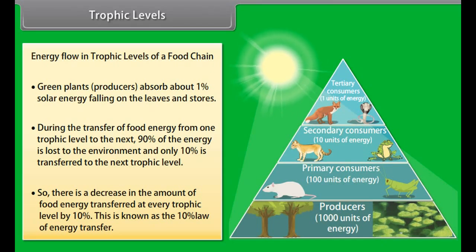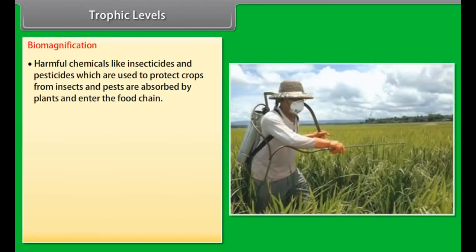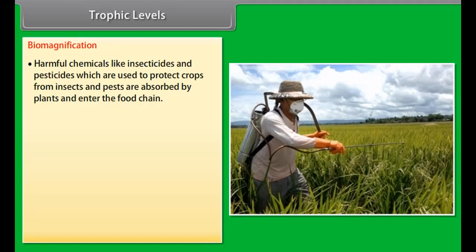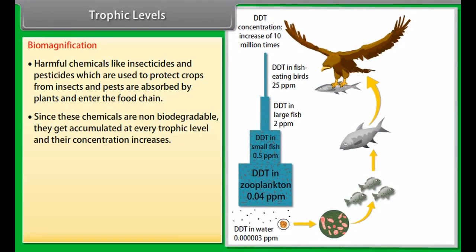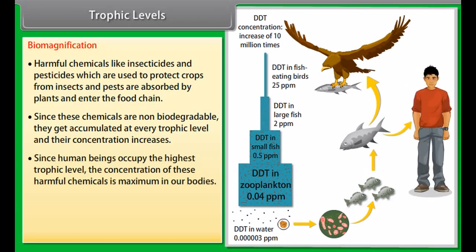Energy flow in trophic levels of a food chain. Green plants — producers — absorb about 1% of solar energy falling on the leaves and store it. During the transfer of food energy from one trophic level to the next, 90% of the energy is lost to the environment and only 10% is transferred to the next trophic level. So, there is a decrease in the amount of food energy transferred at every trophic level by 10%. This is known as the 10% law of energy transfer.